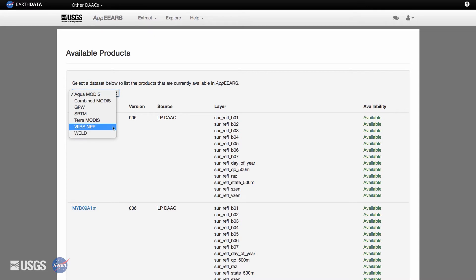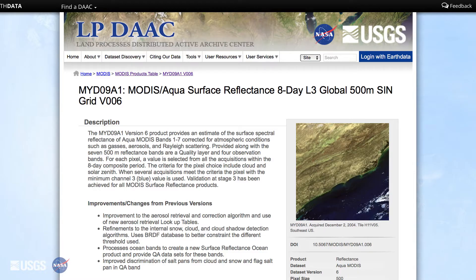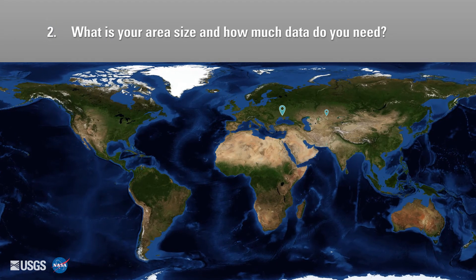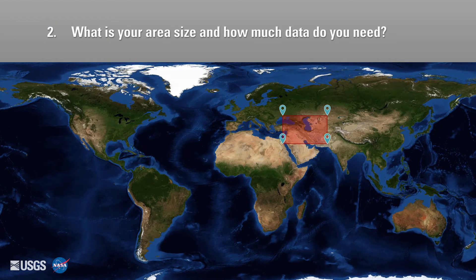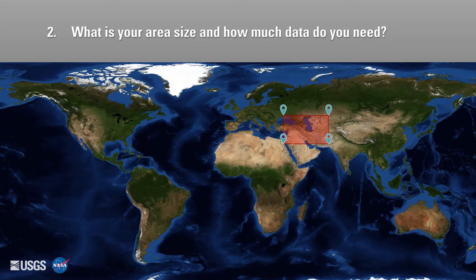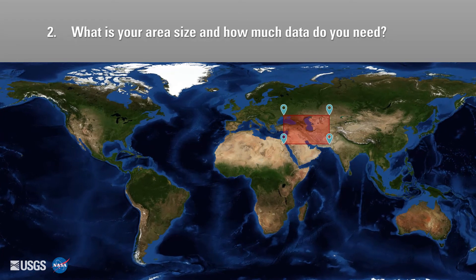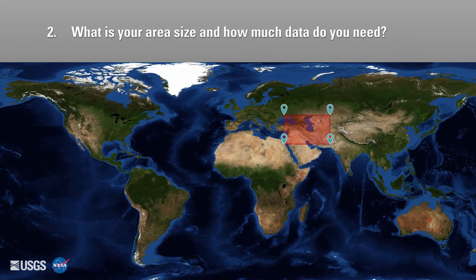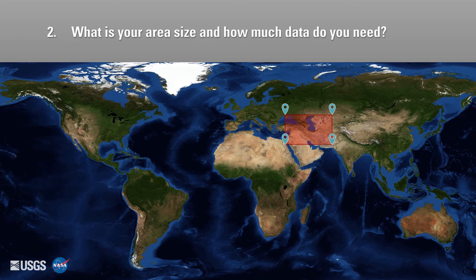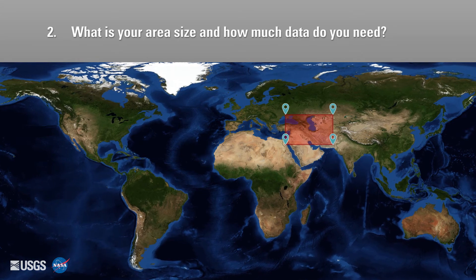From the Help tab, you can view the most up-to-date list of products currently available in APIRS. Click on the product name links for more information on a specific product. What is your area size, and how much data do you need? With the APIRS area sample function, you can retrieve time series data for areas anywhere on the globe for a defined set of layers.